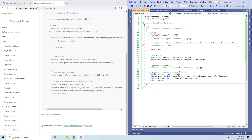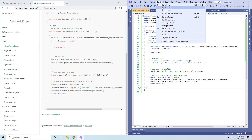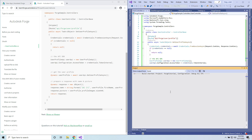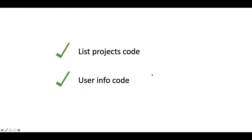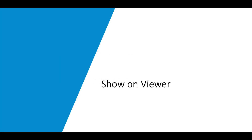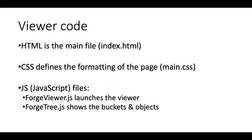The next section is about the viewer, which is the client side. At this point we should be able to build our project and it should build without any error messages. We are going to create the HTML, which is the main file for our application, the CSS that defines the formatting, and finally the JavaScript code to initialize the viewer and the Forge tree to show the objects in my application.